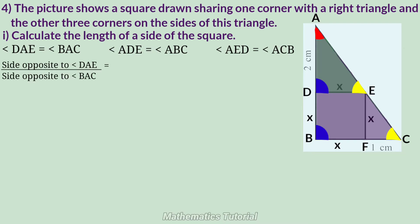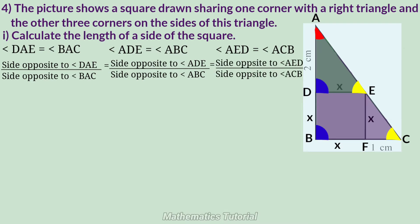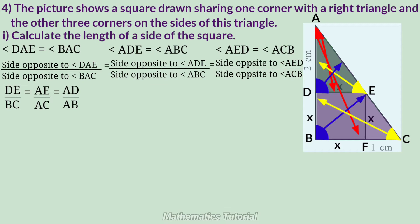Side opposite angle DAE by side opposite angle BAC equals side opposite angle ADE by side opposite angle ABC, equals side opposite angle AED by side opposite angle ACB. Angle DAE's opposite side is DE; angle BAC's opposite side is BC; angle ADE's opposite side is AE; angle ABC's opposite side is AC; angle AED's opposite side is AD; angle ACB's opposite side is AB. So DE/BC = AE/AC = AD/AB.